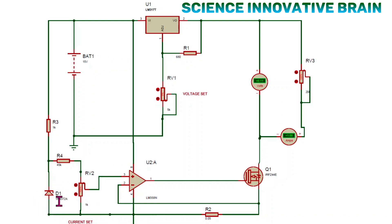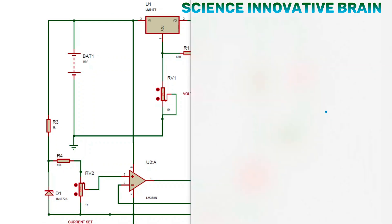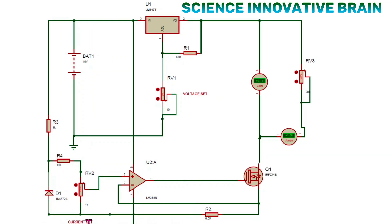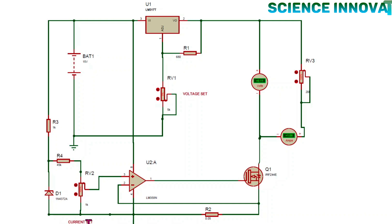A Zener diode is connected which provides the reference voltage for the current set. This is connected with a one kilo-ohm resistor in series, giving a reference voltage that goes to pin number three of the comparator. With the help of this potentiometer we can increase or decrease the current set limit. In this manner the circuitry works. I hope you enjoy this video — if you are new on the channel please like, share, and subscribe. Thank you, bye bye.